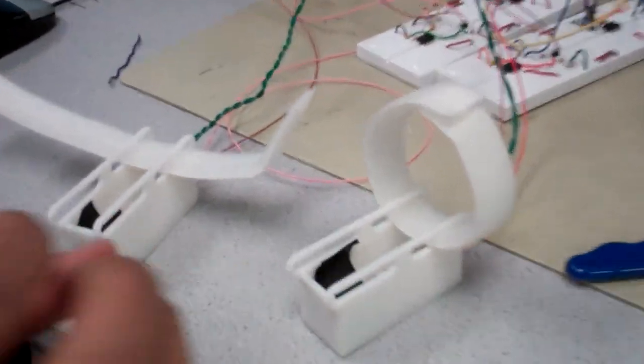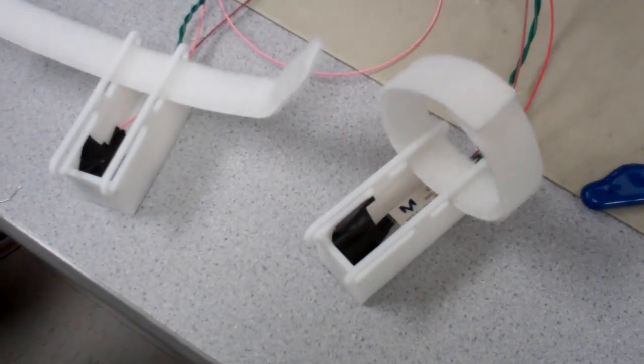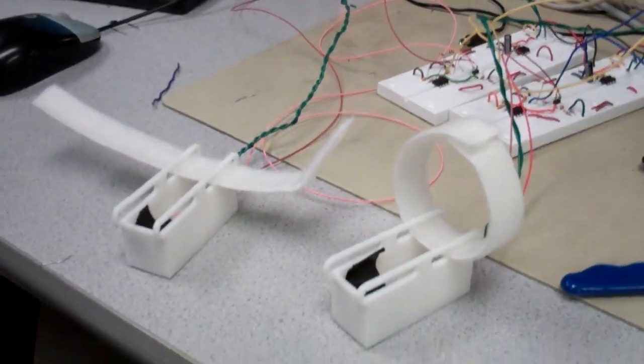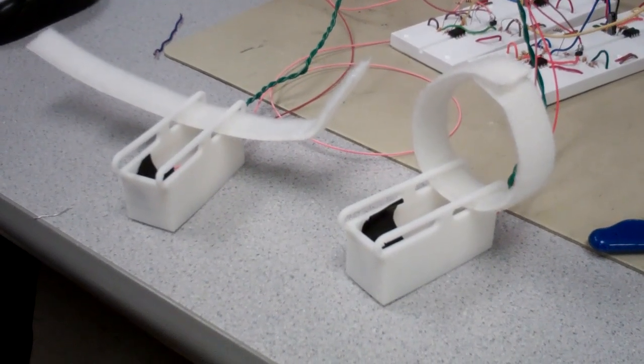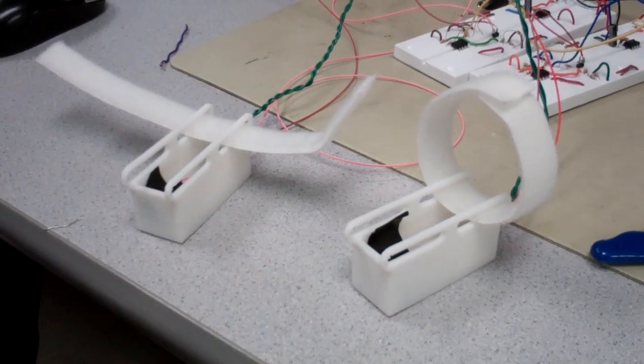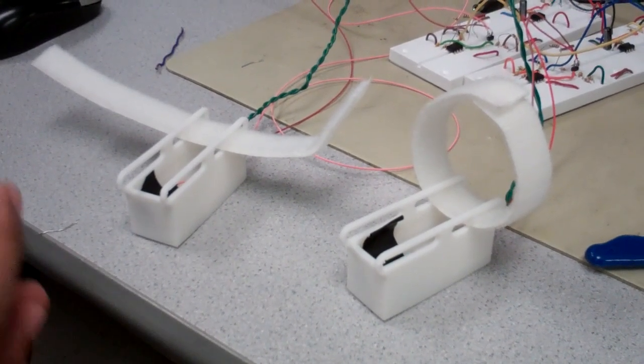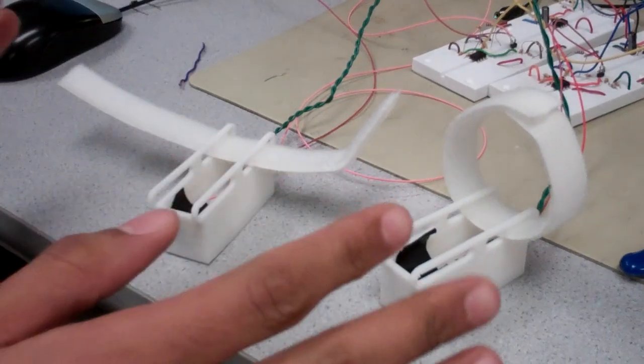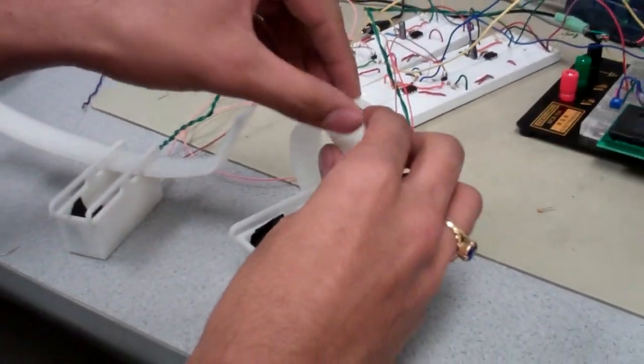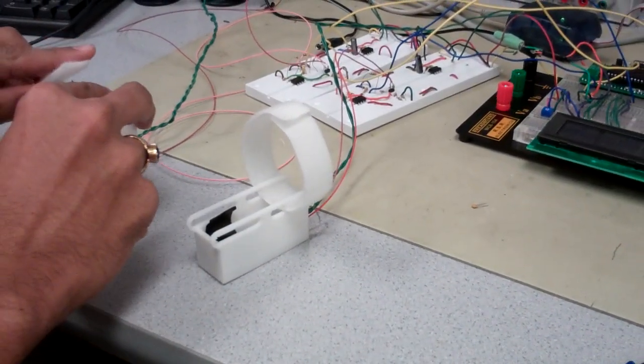So here you can see we have our two boxes. These boxes are the main heart of our drum sets. And they contain a flex sensor and a microphone. And with these two sensors, which we'll explain in more detail later, you can effectively recreate the feel of making drum sounds.